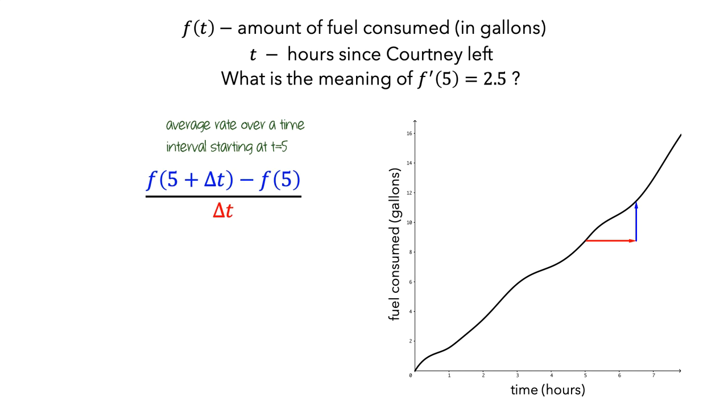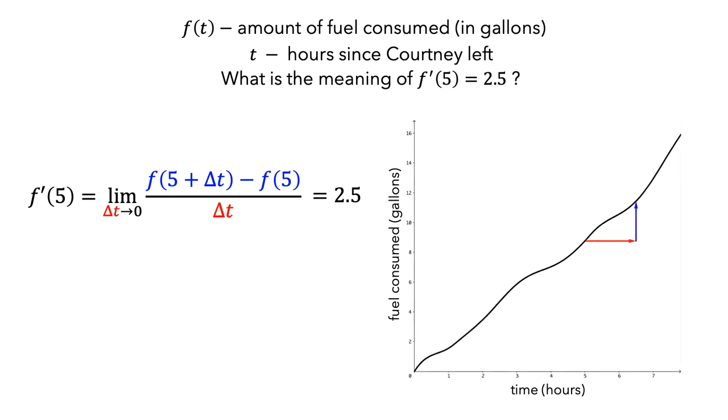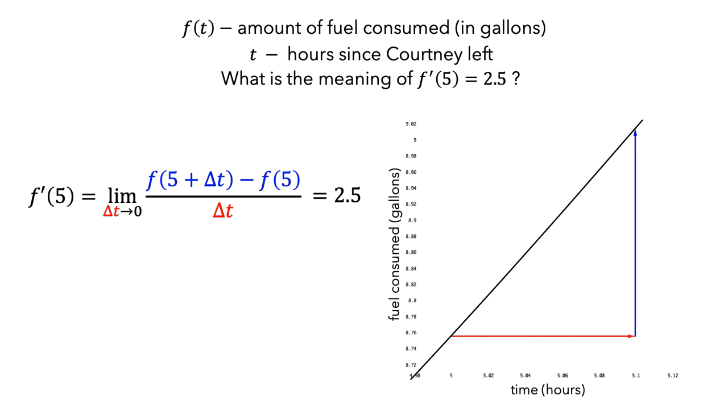And now we want to look at the instantaneous rate of change rather than the average rate of change. To get the instantaneous rate of change from the average rate, we take the limit of the average rate of change as delta t approaches 0. And this is supposed to be equal to 2.5. This limit means that we're evaluating the average rates of change over smaller and smaller intervals. So let's shrink the delta t interval. And let's zoom in to see this a little better. When delta t is small enough, the slope starts to look constant. In particular, the essentially constant slope in this window would be 2.5.